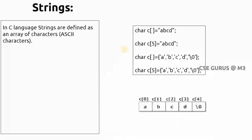A string is an array of characters, or a group of characters. The data type is char — it's a collection of all the characters. If you want to group a set of characters you can use double quotes. When you do this, it stores in memory as c[0], c[1], c[2], c[3], and so on. When you say a group of characters is a string, the last character must be the null character.